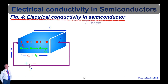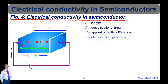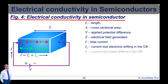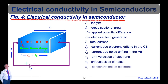As shown in the figure: L is the length, A is the cross-sectional area, V is the applied potential difference, E is the electrical field generated, I is the total current, I subscript e is the current due to electrons drifting in the conduction band, I subscript h is the current due to holes drifting in the valence band, v subscript e is the drift velocity of electrons, v subscript h is the drift velocity of holes, n subscript e is the concentration of electrons, and n subscript h is the concentration of holes.